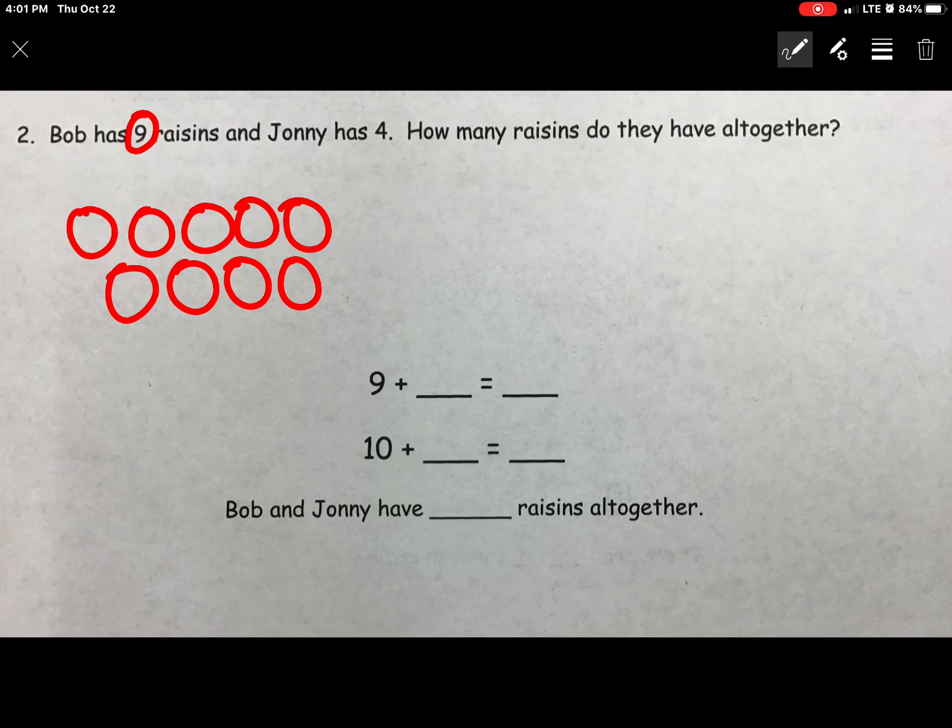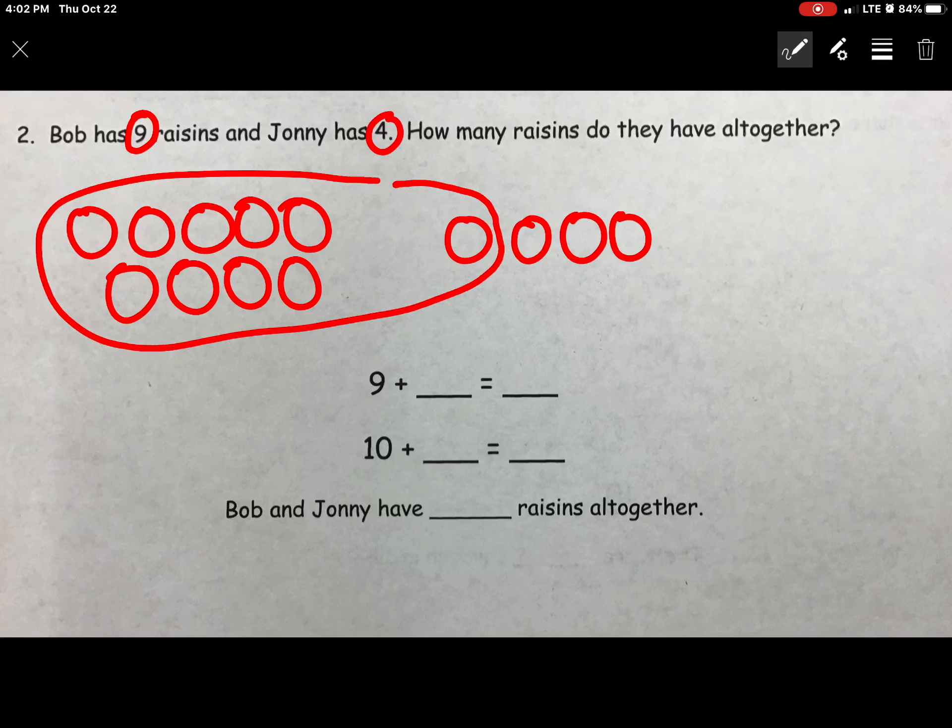And Johnny has 4. Our second math fact is 4. In that group we will draw 1, 2, 3, 4. We're going to look at which number is closest to 10. 9. And we know that 9's buddy to make a 10 is 1. So we're going to have to take 1 away from our second group and add it to our first group. So I'm going to start by taking 1 and adding it to 9. Then I'm going to quickly count to make sure that I have 10 in my group.